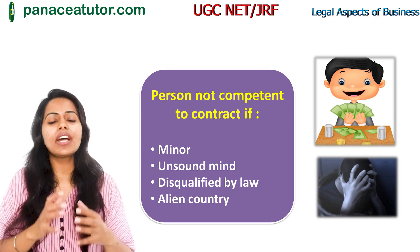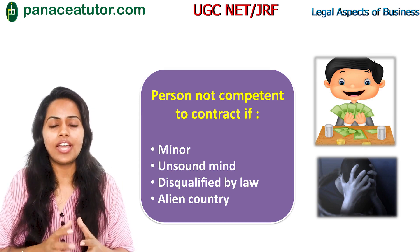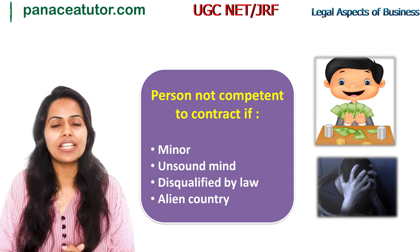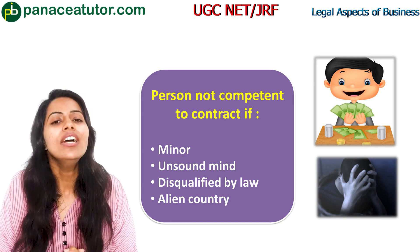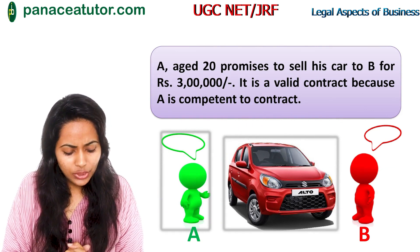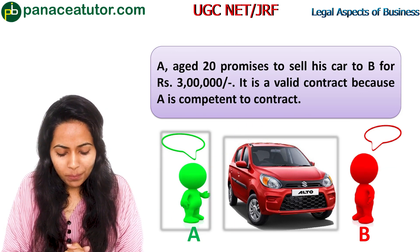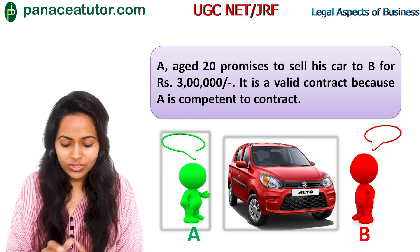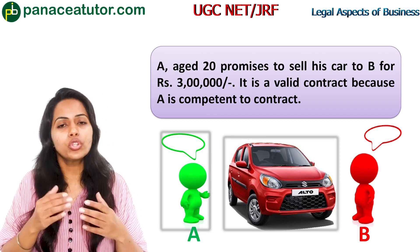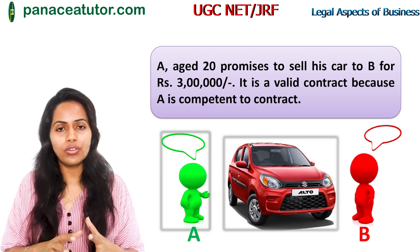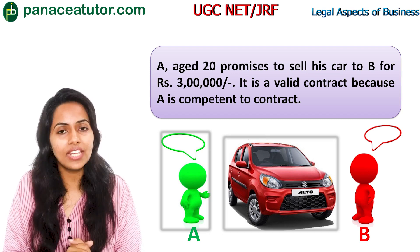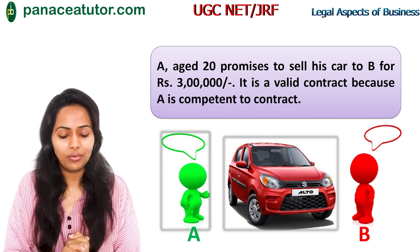For example, if A is 20 years old and promises to sell his car to B for Rs. 3 lakh, it is a valid contract because A has attained majority age and is competent to contract. However, if A were 12 years old, the contract would not be valid — it would be a void contract. This illustrates the importance of the capacities of parties element.